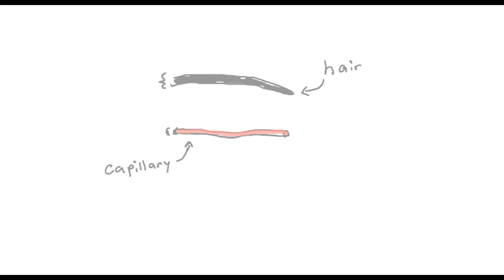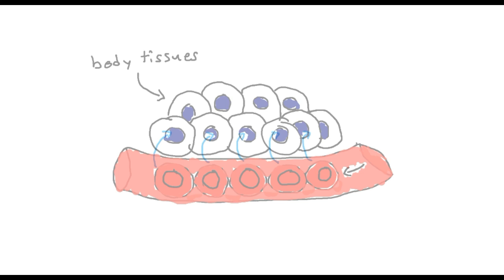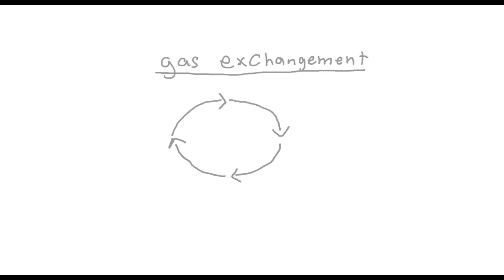As the blood cells approach the capillaries, the oxygen leaves the blood cell and into the body tissues. As the blood cells leave the capillaries, carbon dioxide leaves the body tissues and into the blood cells. Deoxygenated blood returns back to the heart, to the lungs, and the process repeats.